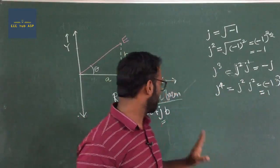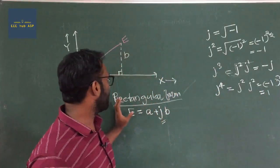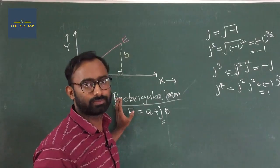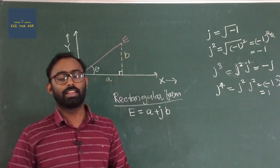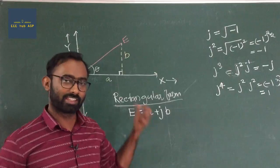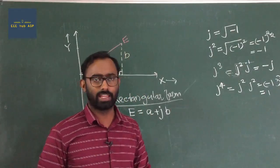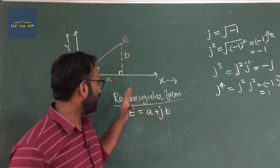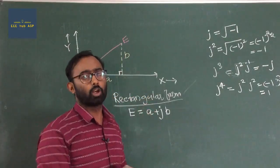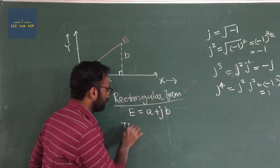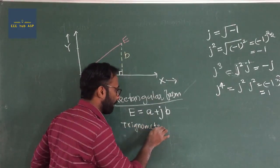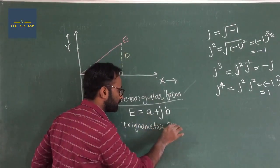This is called rectangular form. This is the trigonometric form — trigonometric form, trigonometric form. It can be explained as the trigonometric form.